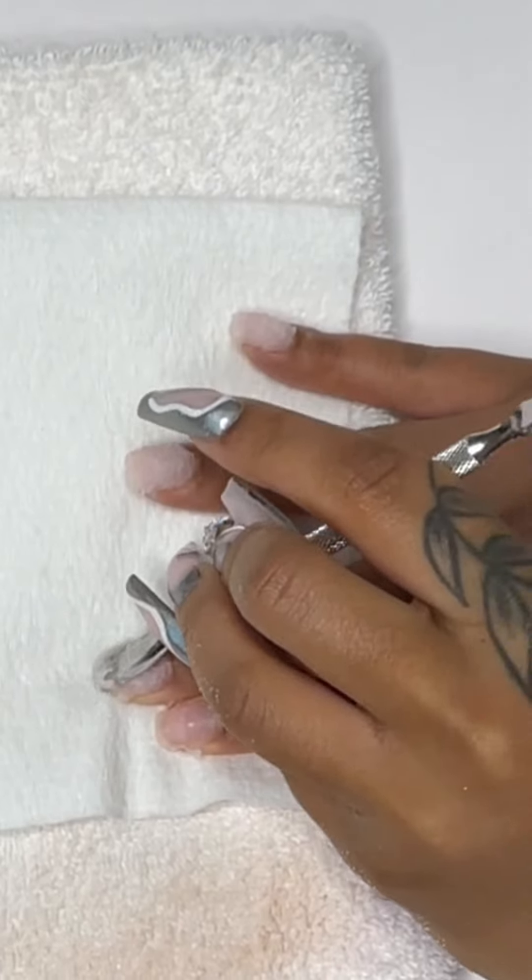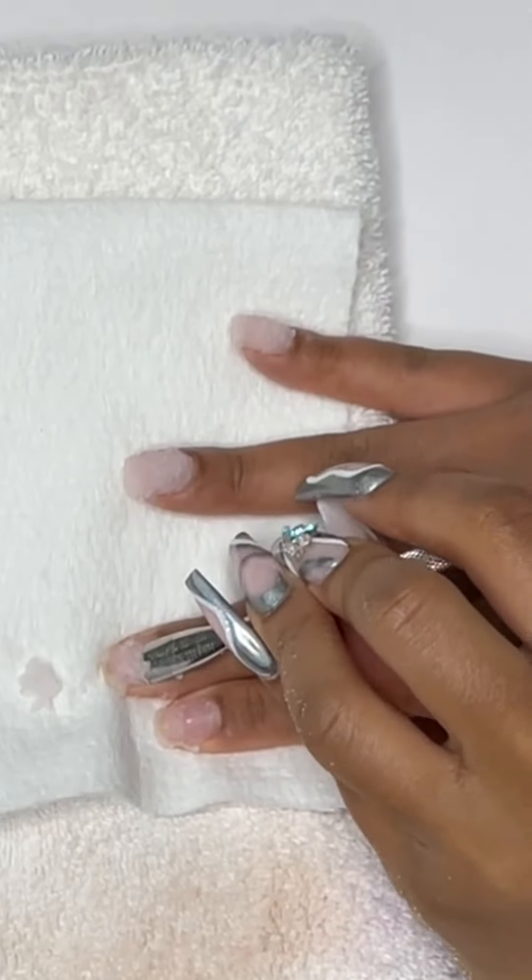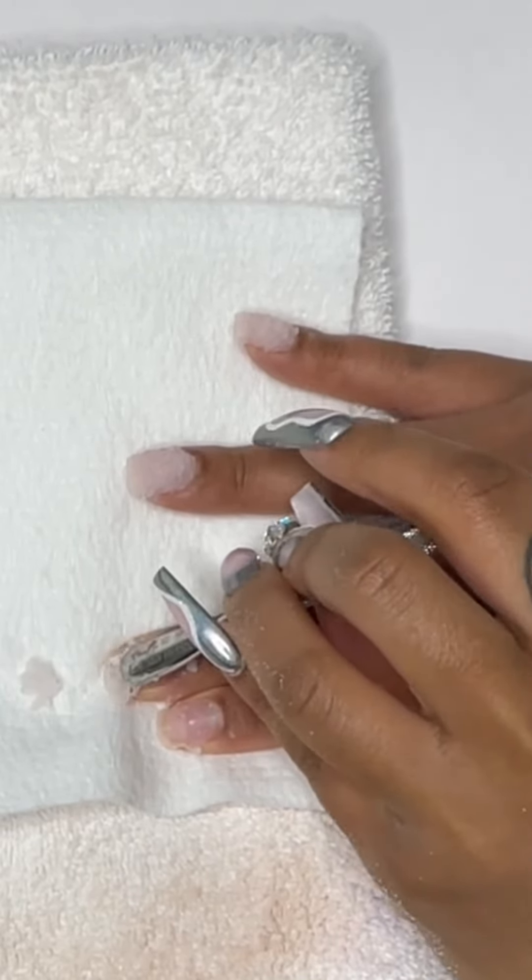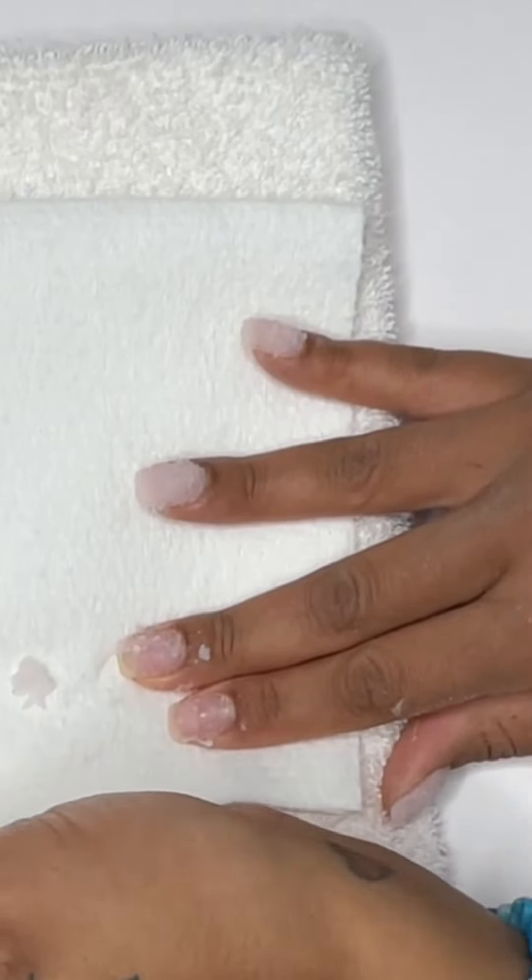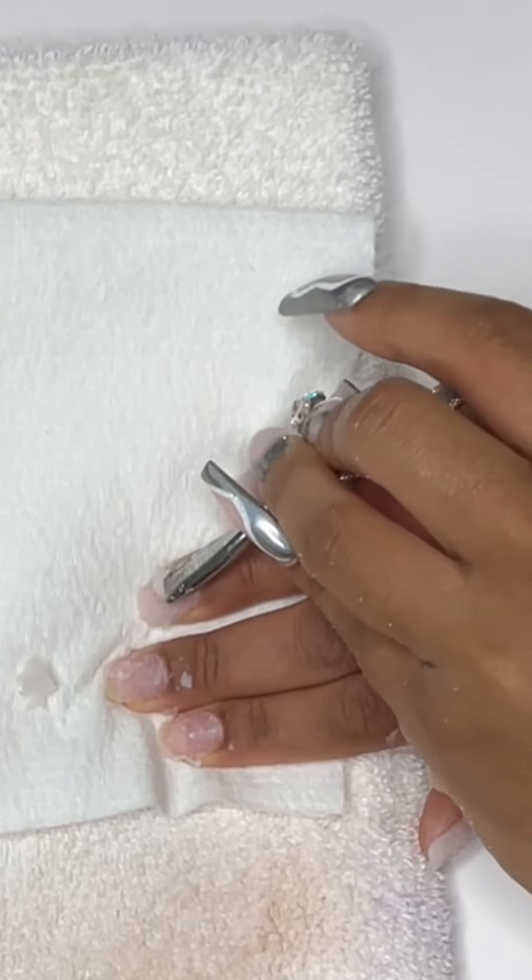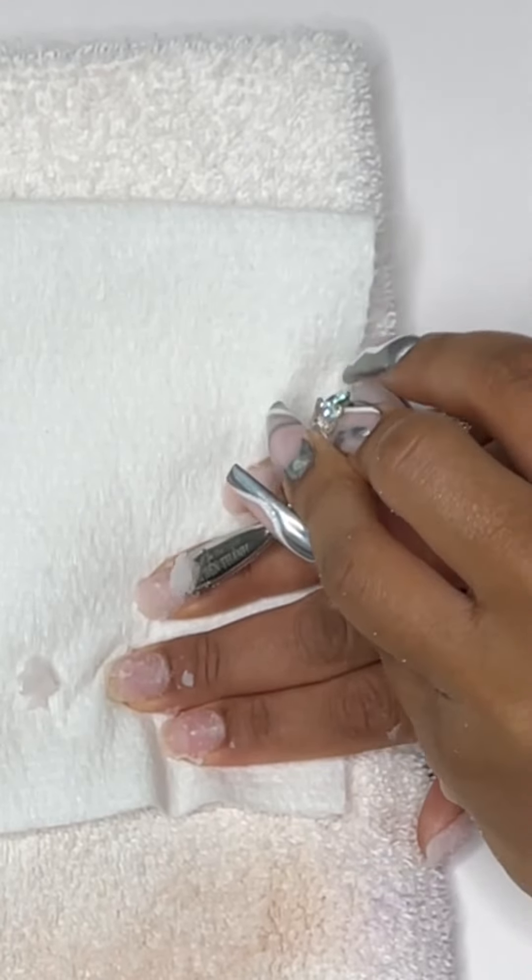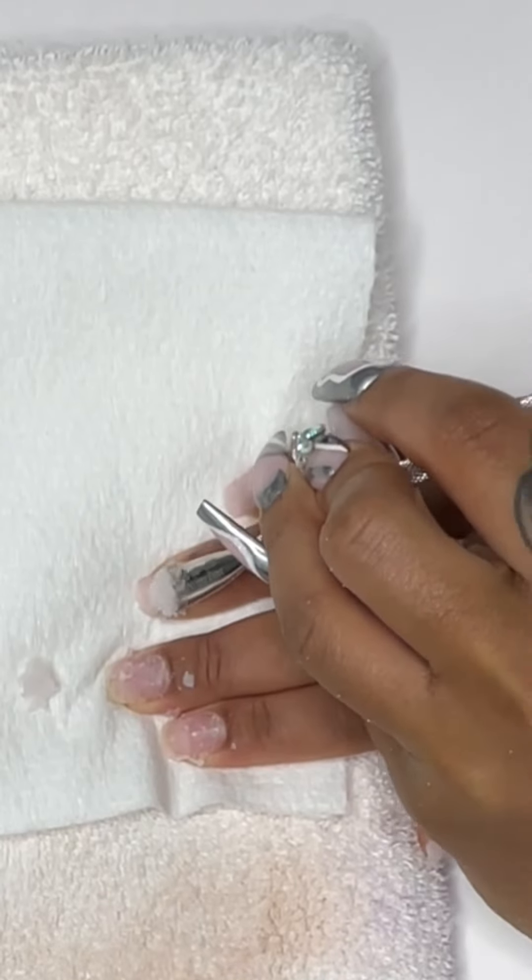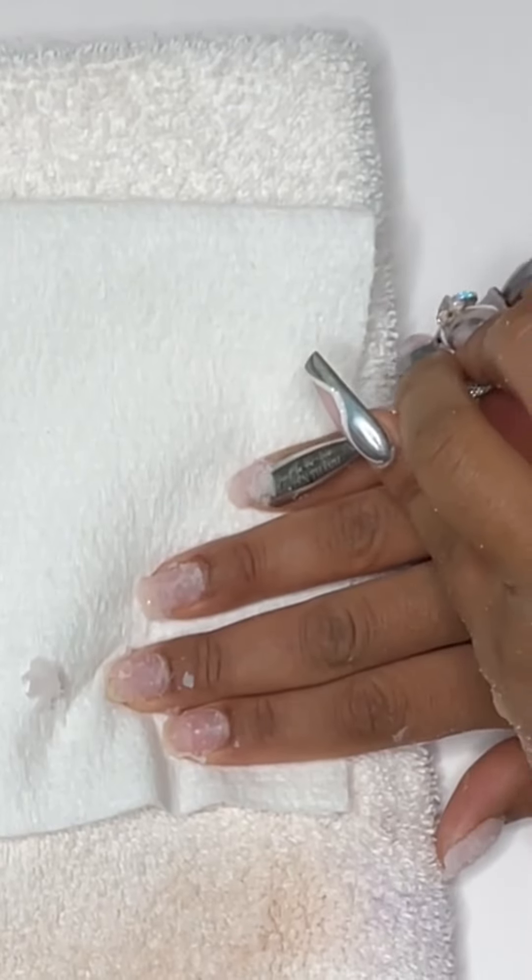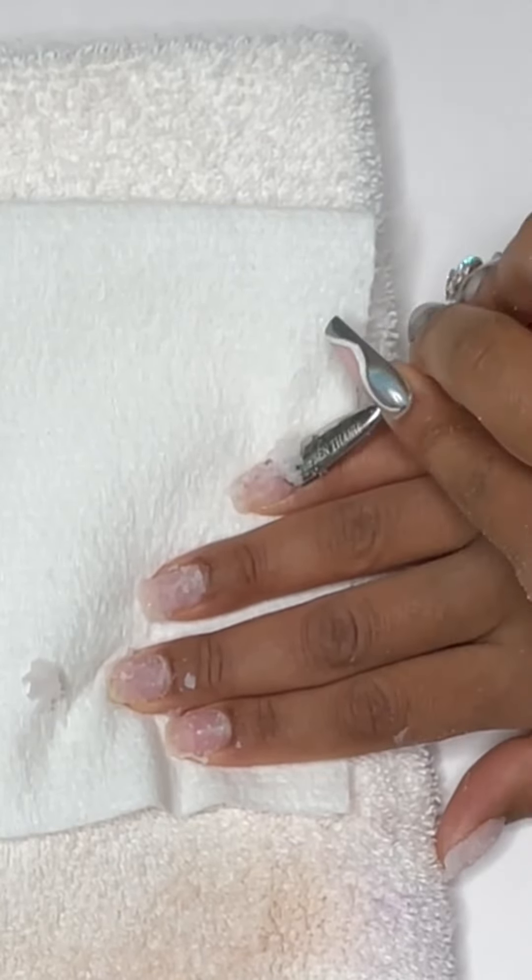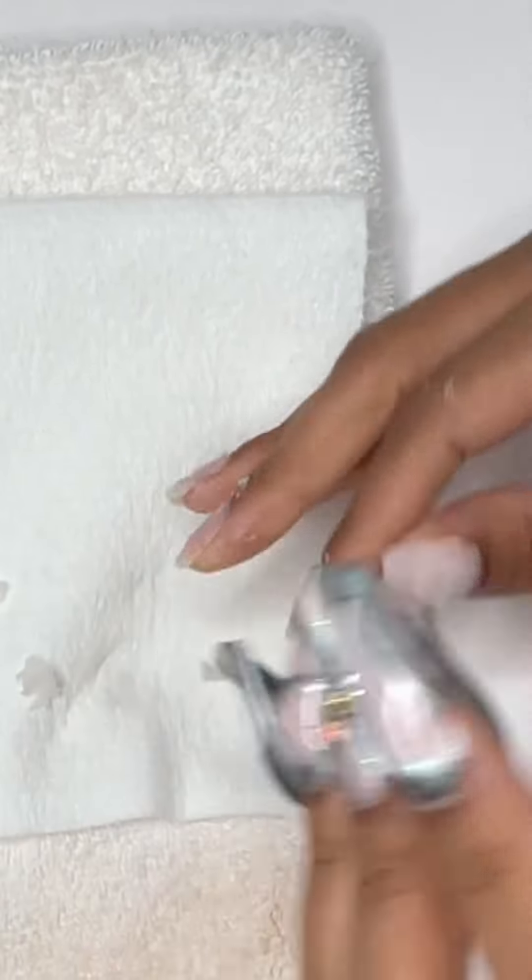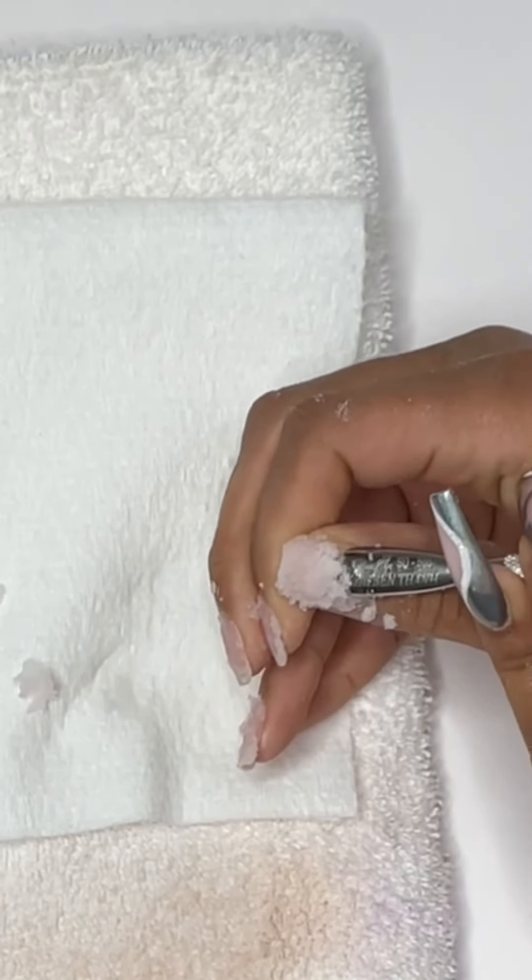Now you're just going to be taking your cuticle pusher and taking it with that curved piece and just pushing down all of that product. Just push it all off of your nails. When it comes to soaking mine off, yes, as you can see I am a bit aggressive when it comes to doing mine. When you are doing a client, you want to make sure that you are being as gentle as possible.